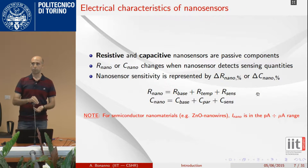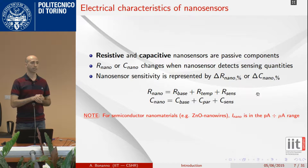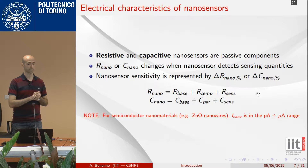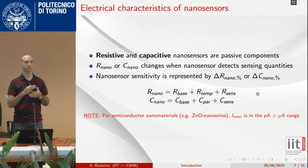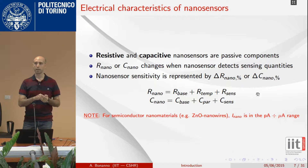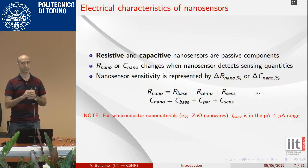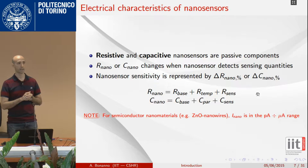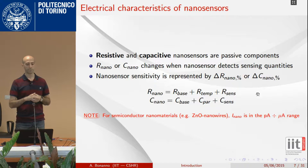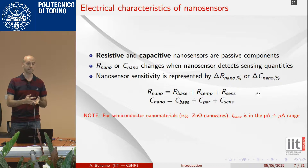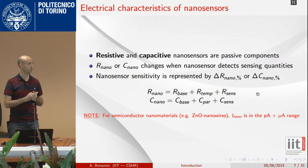In particular, I will focus on passive nanomaterials that can be used for sensing. They are characterized by a resistance and a capacitance that change depending on the sensing properties. So if a nanowire is in contact with a specific object at the nanoscale, its resistance and capacitance change, and the deviation from the base value represents the nanosensor's sensitivity to that object.